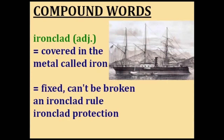Ironclad literally means to be covered in the metal called iron — for example, a battleship where the iron provides protection. But the word ironclad is often used metaphorically: an ironclad rule or ironclad protection. It means something that is fixed and can't be broken. An ironclad rule is one you can't break, and ironclad protection is protection that can't be penetrated.